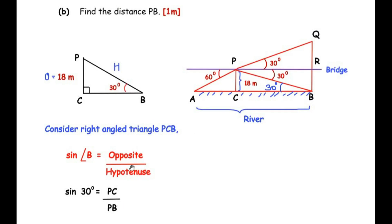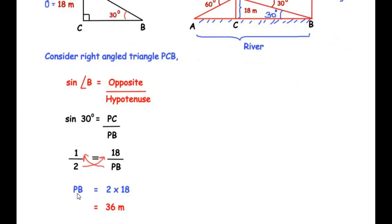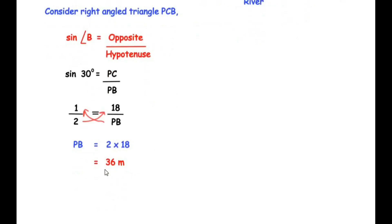We need to find PB, which is the hypotenuse. Since we have the opposite side and need the hypotenuse, we use the sine ratio: sine 30° = PC / PB. Sine 30° = 1/2 and PC = 18, so 1/2 = 18/PB. Cross-multiplying gives PB = 2 × 18 = 36 meters.